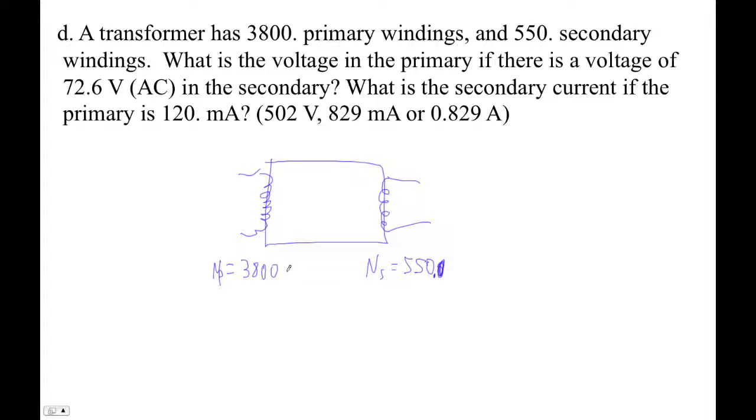What is the voltage in the primary? So V primary equals question mark if there's a voltage of 72.6 in the secondary. This is a step down transformer, so there's going to be more voltage in the primary.